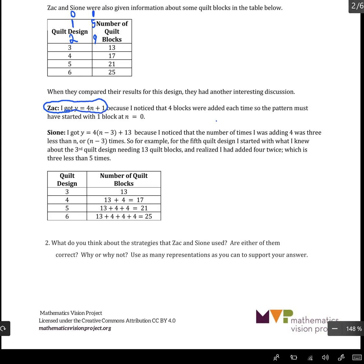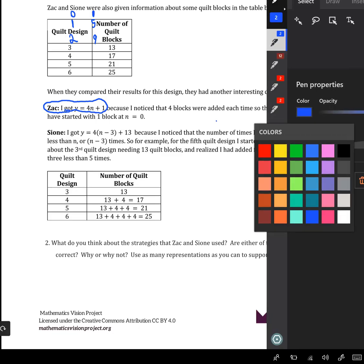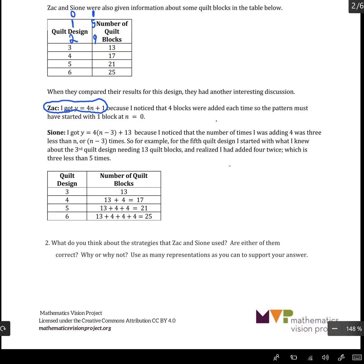Again, Sion says, well, I tried the n minus 1 adjustment before. So let me try an n minus 3 adjustment here. So she got 4 times (n minus 3) plus 13. So let's see if that is again equivalent. So if we use the distributive property, that becomes 4n minus 12 plus 13, which is 4n plus 1. So it's actually the same thing Zac got, it's just written in a different format.